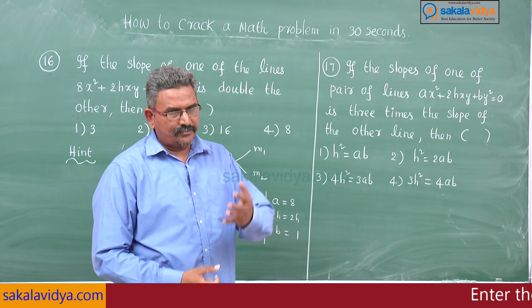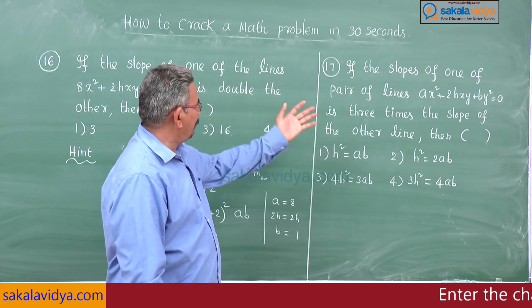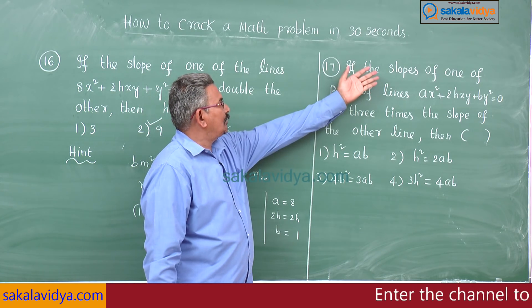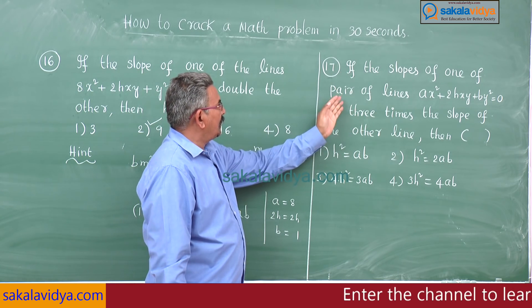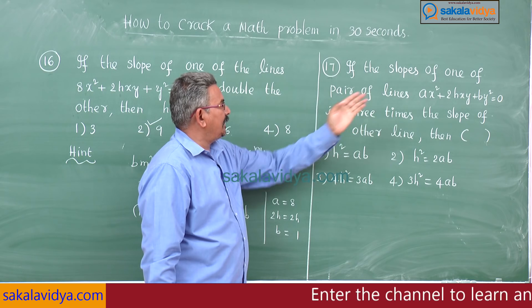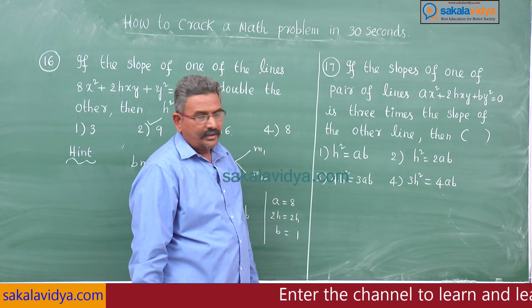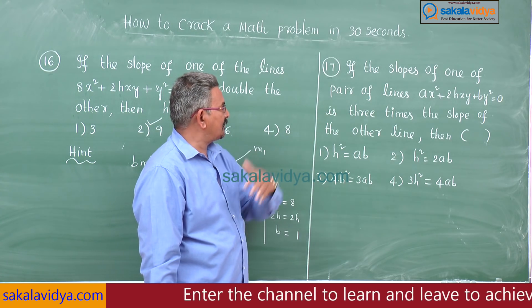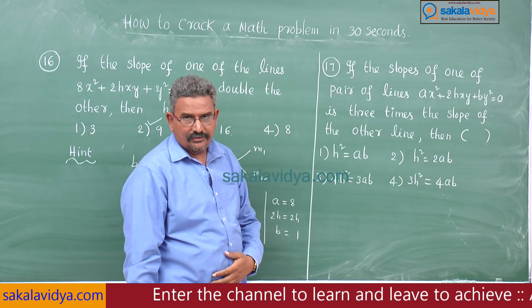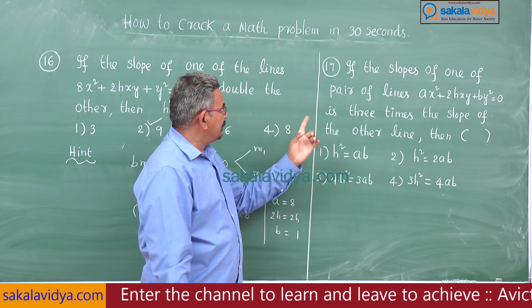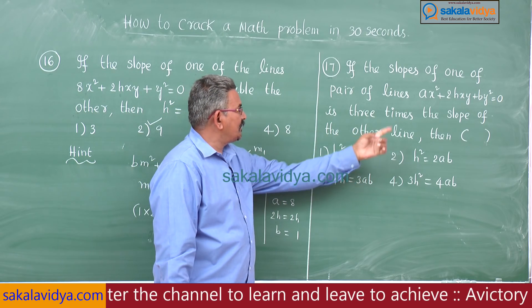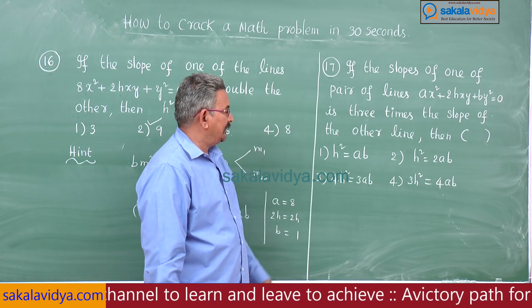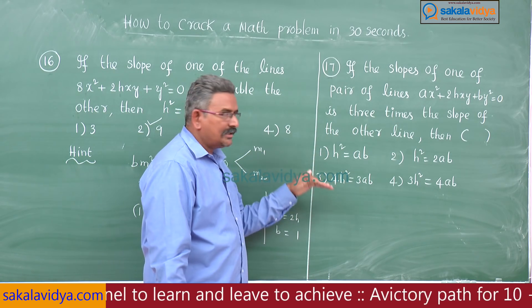Now let us move to the seventh problem. If the slopes of one of the pair of lines ax² + 2hxy + by² = 0 is 3 times the slope of the other line, then what is the condition?